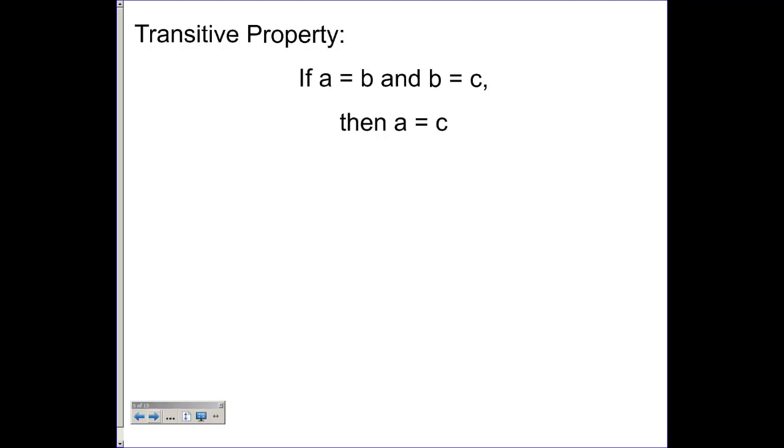let's say 4 plus 2 is equal to 3 plus 3. So this could be a and that could equal b. And we also know that 3 plus 3 is equal to 5 plus 1. Here's b and that's c.